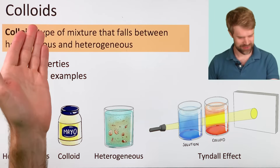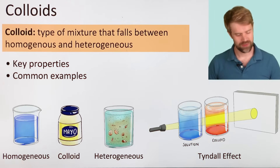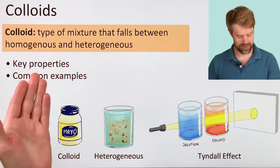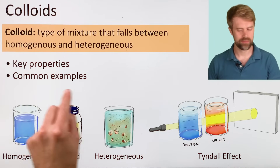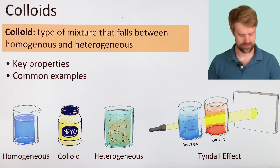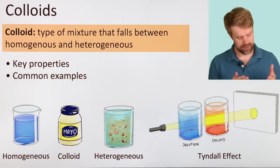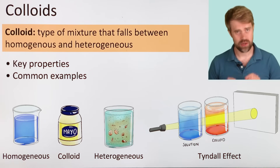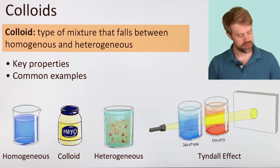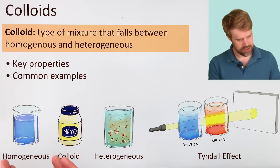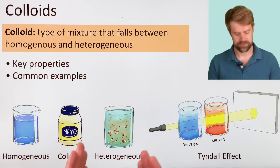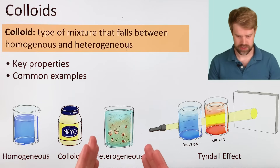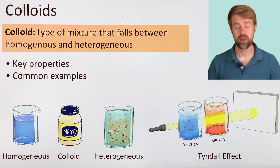Let's talk about colloids. We'll look at some key properties and common examples. A colloid is a type of mixture that falls somewhere between a homogeneous mixture and a heterogeneous mixture.